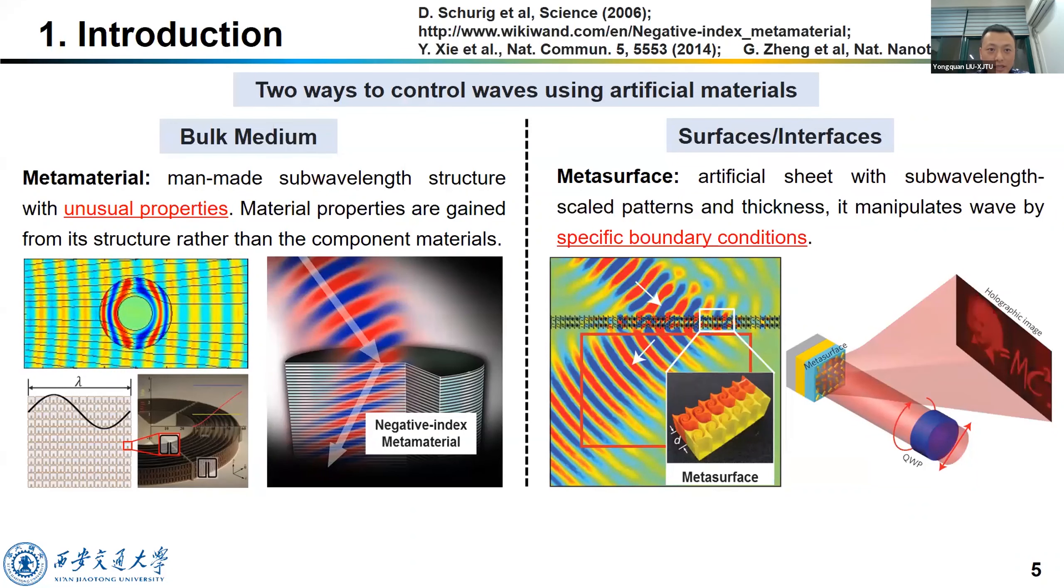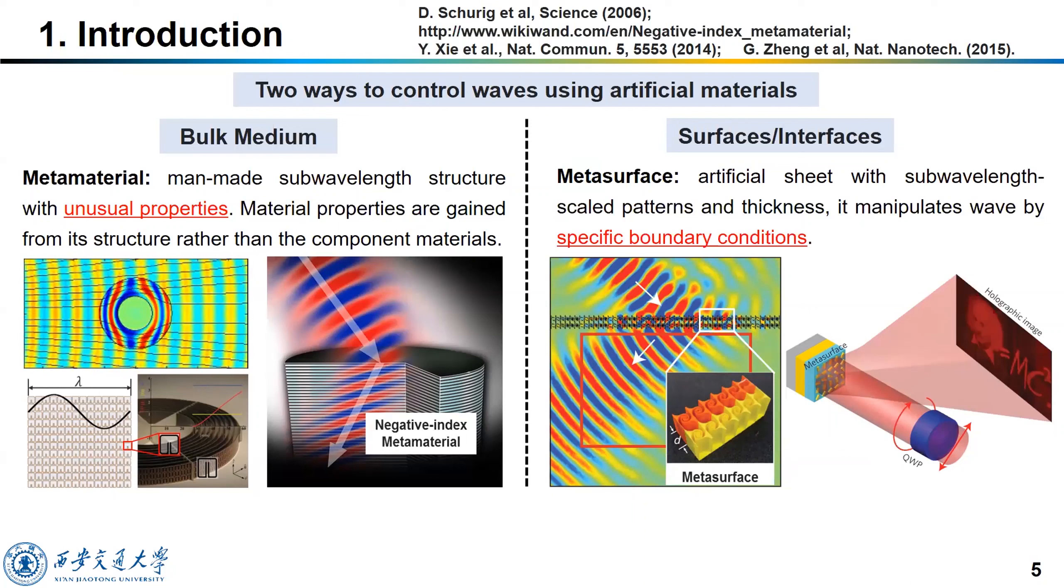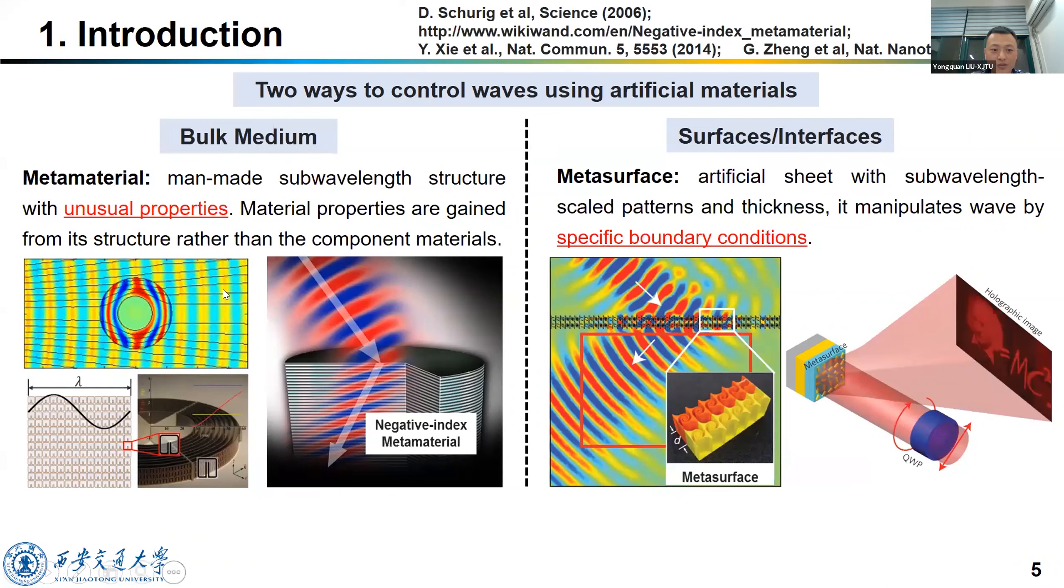In the past 20 years, two effective methods to control waves using artificial materials have been proposed. One is using the artificial bulk medium, namely the so-called metamaterial. Metamaterials are man-made structures with unusual properties. For example, one can design a complex structure with inhomogeneous material properties to let the wave bypass the region in the left picture to make it invisible. And another example is we can design a material with negative properties to let the wave reflect in the negative direction.